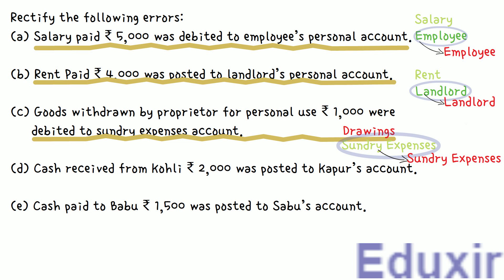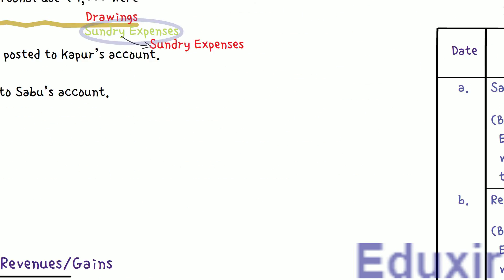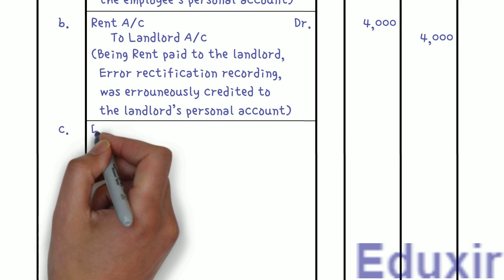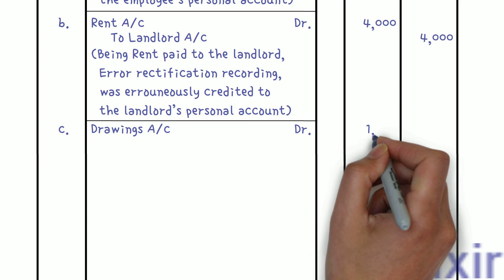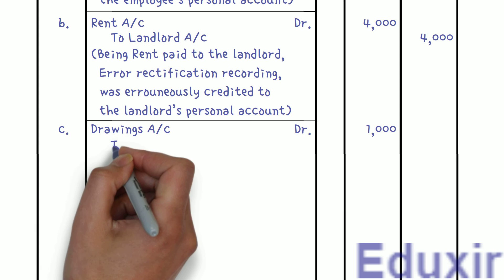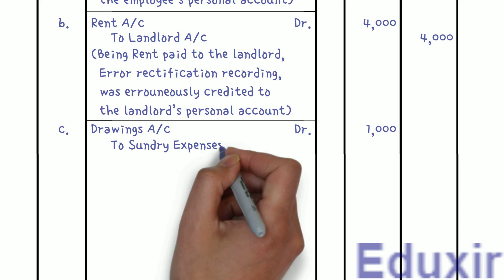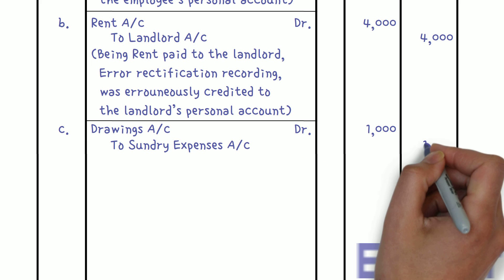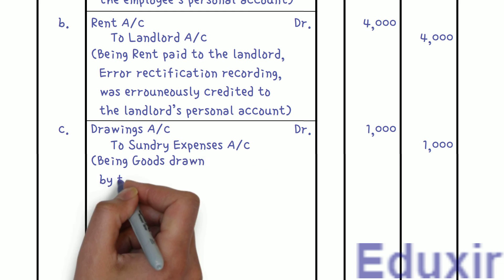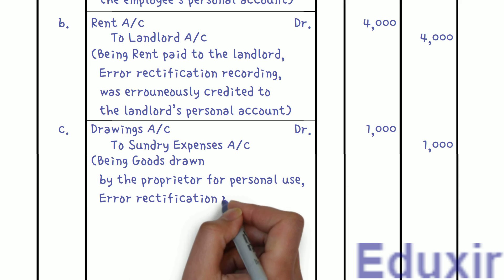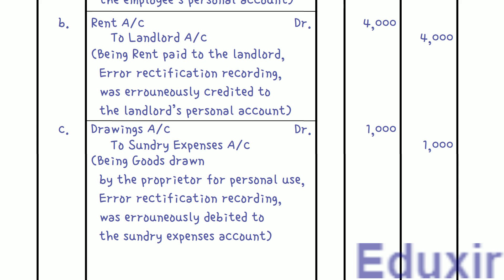Let us now record the entry. Entry: Drawings Account DR Rs. 1,000; To Sundry Expenses Account Rs. 1,000. Narration: Being goods drawn by the proprietor for personal use — error rectification, recording was erroneously debited to the sundry expenses account. A line is drawn to mark completion of these entries.